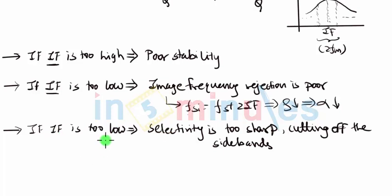Welcome to In5Minutes. The next important point is if IF is too low, then the selectivity becomes too sharp.